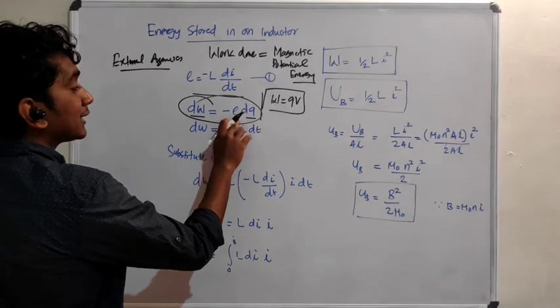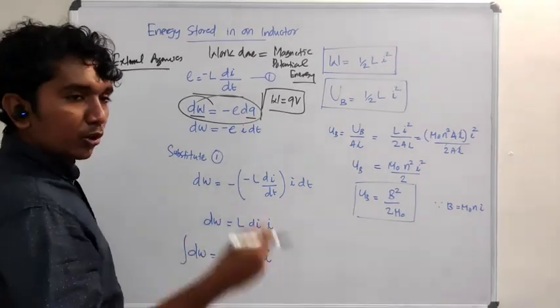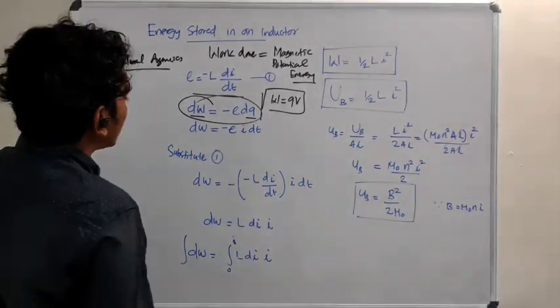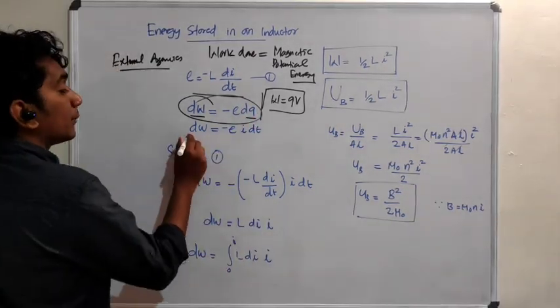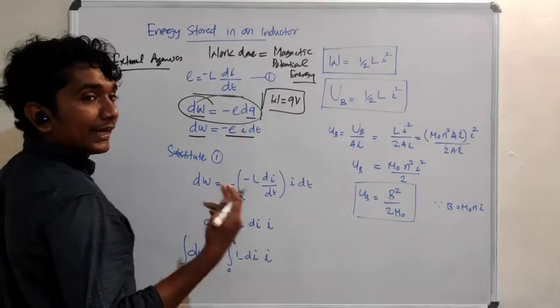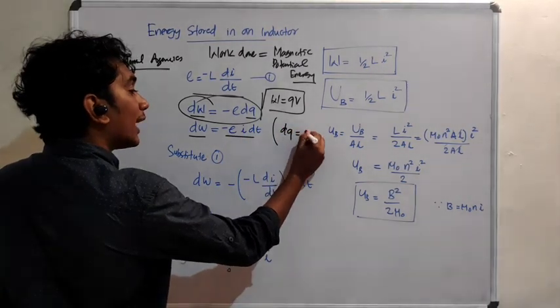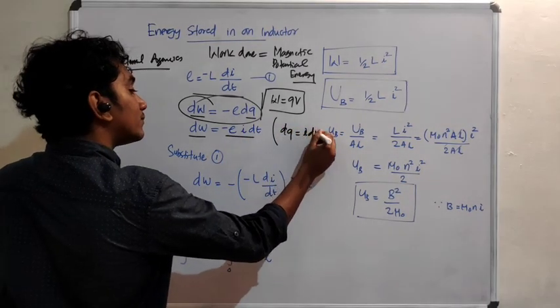So here, DW = minus E times DQ. And we know that DW = minus E times I·dt, because DQ = I·dt.